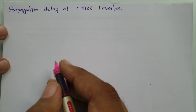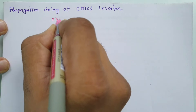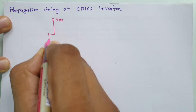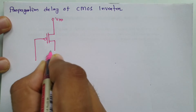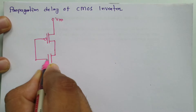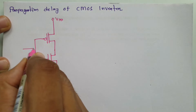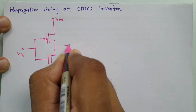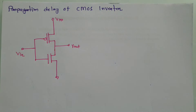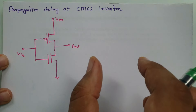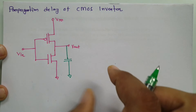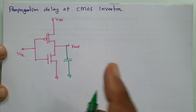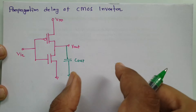Let me explain the basic circuit of the CMOS inverter. We have a VDD supply connected to a PMOS transistor — indicated by the bubble symbol — and an NMOS transistor connected to ground. The input supply is applied at the gate, and the output voltage is taken at the drain node. When this inverter connects to another gate, there is a load capacitance C_out associated with that next circuit.